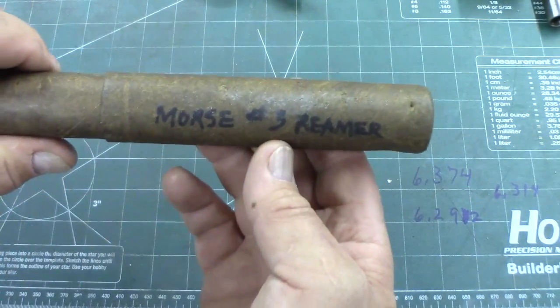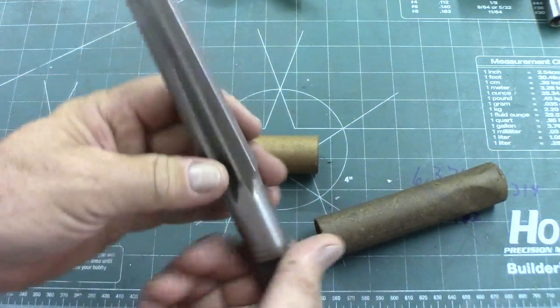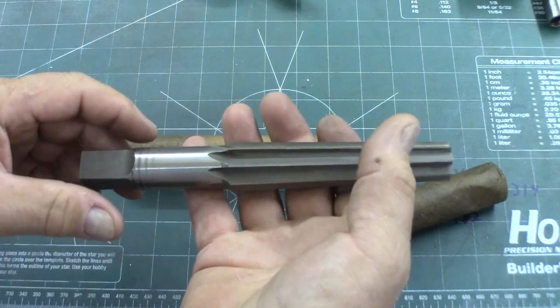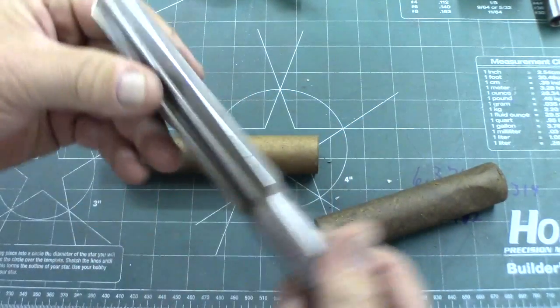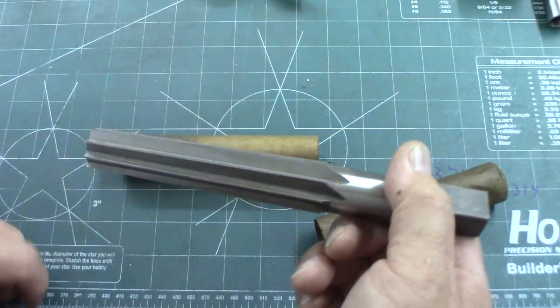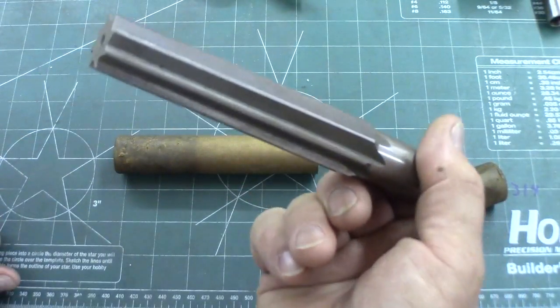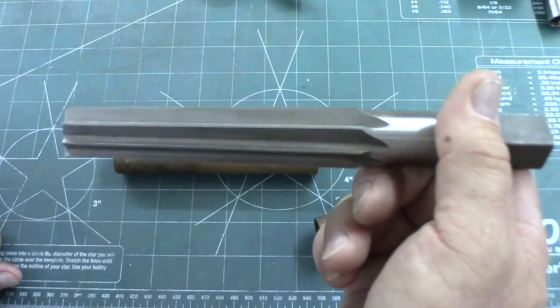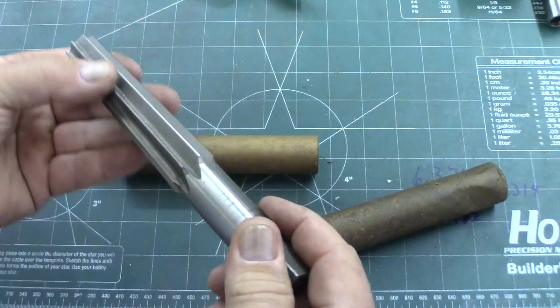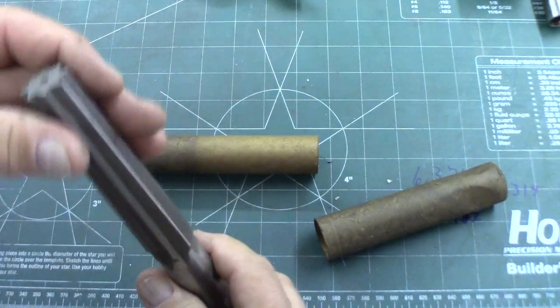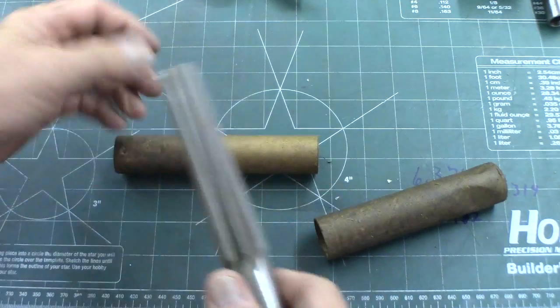Here we go, number three Morris taper reamer, which is my tailstock on my lathe. It's a number three so if I make something that needs a Morris taper socket, I actually have a deal and I could actually ream it. So it's really nice. Very nice. It looks basically brand new. If it's not, it's hardly ever used at all, maybe a little bit. Nice and sharp.